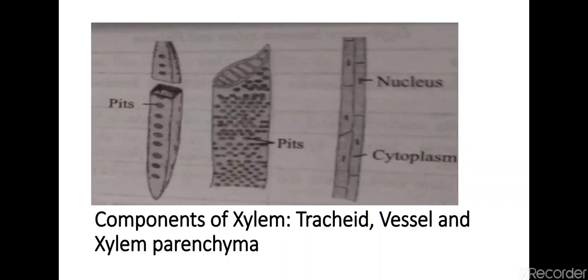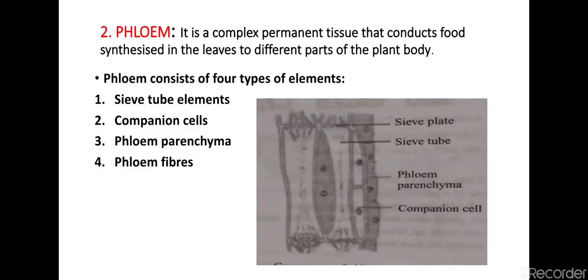Here in the picture you can see the components of xylem — tracheids, vessels, and xylem parenchyma. Next is phloem — phloem is also a complex permanent tissue that conducts food, which is synthesized in the leaves, to different parts of the plant body. Phloem also consists of four types of elements: sieve tubes, companion cells, phloem parenchyma, and phloem fibers. You can see these components in the picture given here.